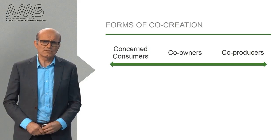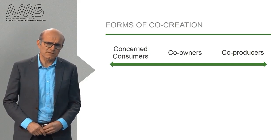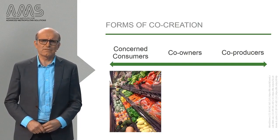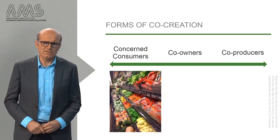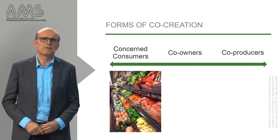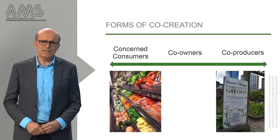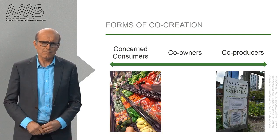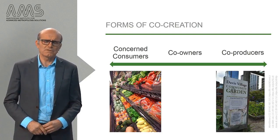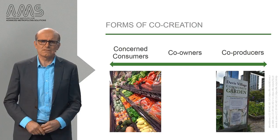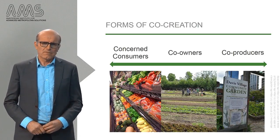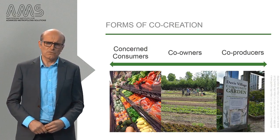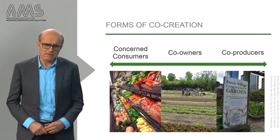With regard to co-creating urban food systems, we distinguish three basic forms as shown here. On the left side of the scheme you see that citizens can be involved as concerned consumers, for example when they pay a fair price to farmers. On the right hand side of the scheme you see that they can also be more actively engaged in food production, for example when growing food for themselves on a private allotment or together with fellow citizens in a community garden. The third form of co-creation found in the middle refers to citizens who commit themselves to buying a share of the harvest.